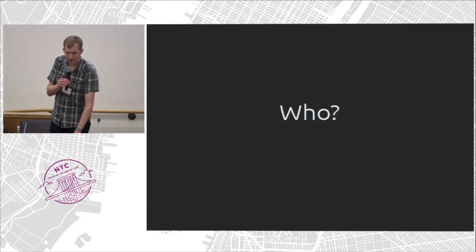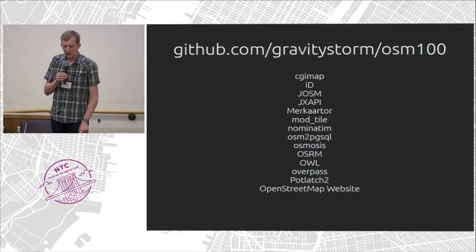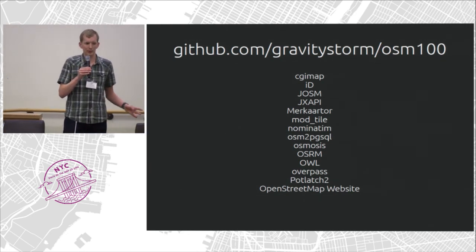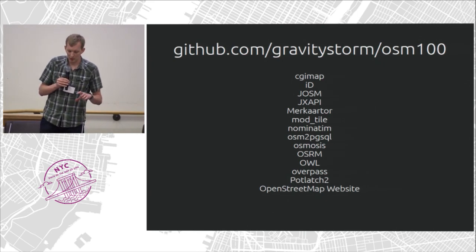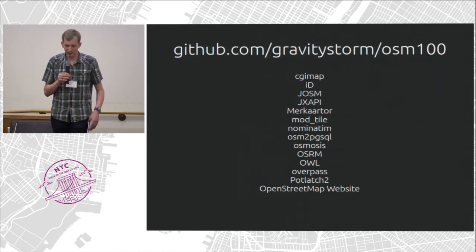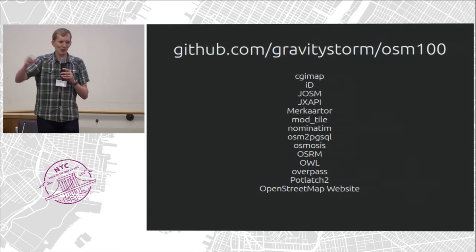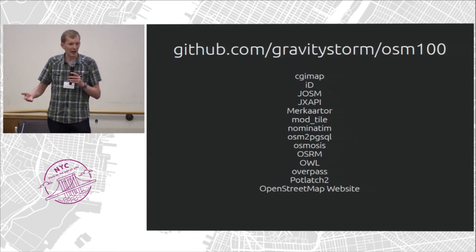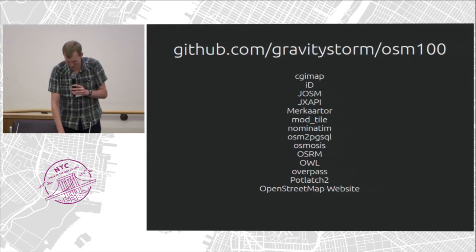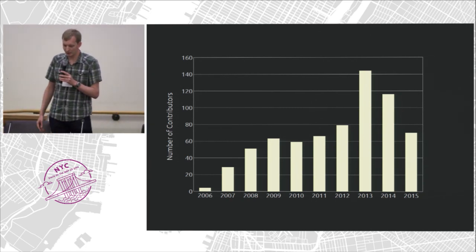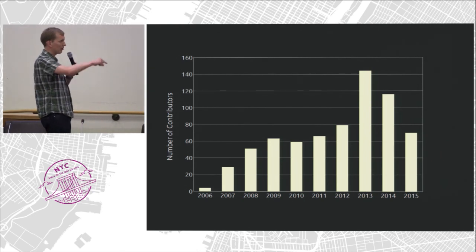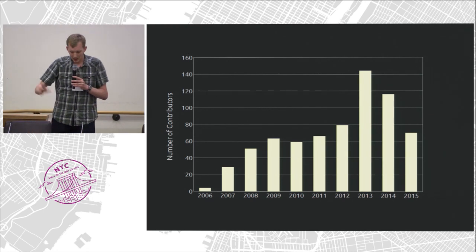I said at the start there weren't many developers — so who's going to do all this? A couple of years ago I had an idea to find out who develops OpenStreetMap, and specifically to get 100 people a year developing core OpenStreetMap tools. I used a list of core software from the engineering working group, wrote a little script, went through all the projects, and asked how many people had contributed in the last year. It came back at 97 — so I thought job done. But I dug out this code recently and put together numbers showing contributors every year for those core projects. Bear in mind 2015 is only halfway through, and you can see it's going up.